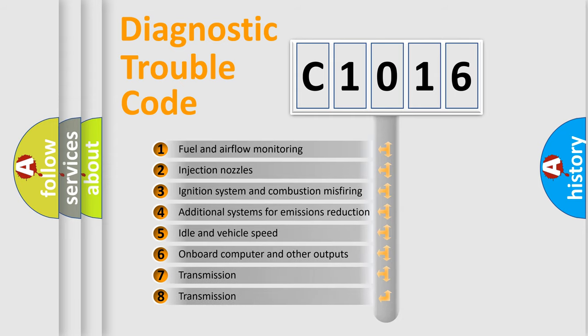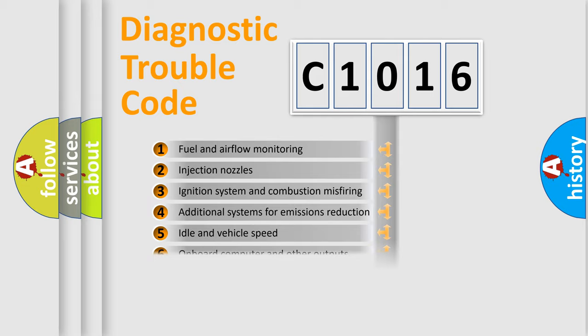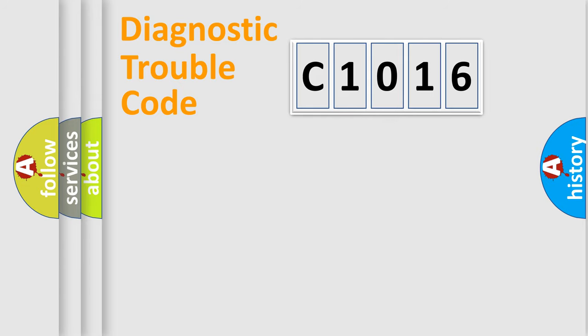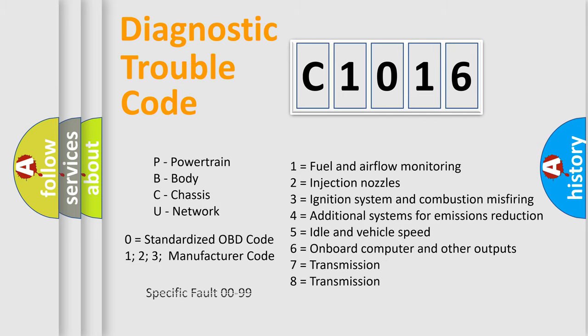The third character specifies a subset of errors. The distribution shown is valid only for the standardized DTC code. Only the last two characters define the specific fault of the group. Let's not forget that such a division is valid only if the other character code is expressed by the number zero.